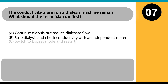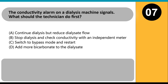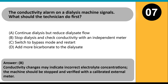The conductivity alarm on a dialysis machine signals. What should the technician do first? A. Continue dialysis but reduce dialysate flow. B. Stop dialysis and check conductivity with an independent meter. C. Switch to bypass mode and restart. D. Add more bicarbonate to the dialysate. Answer B. Conductivity changes may indicate incorrect electrolyte concentrations. The machine should be stopped and verified with a calibrated external meter.